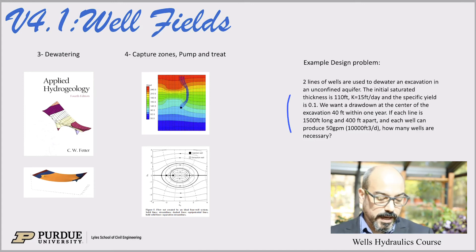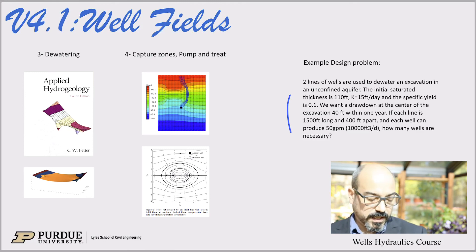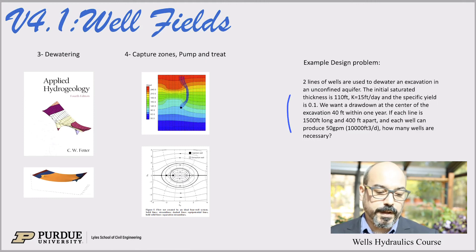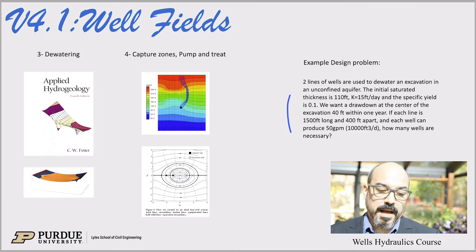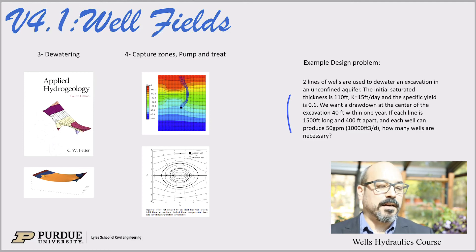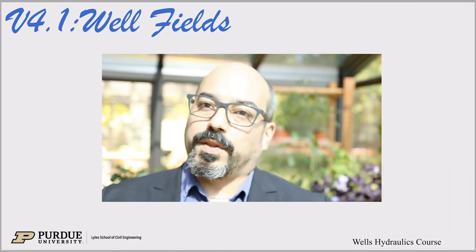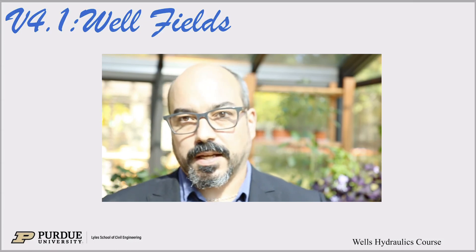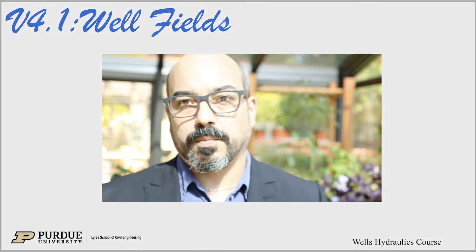Here's an example design problem. We have two lines of wells to dewater an excavation in an unconfined aquifer. The initial saturated thickness is 110 feet, hydraulic conductivity is 15 feet per day, and specific yield is 10 percent. We want the drawdown at the center of the excavation to be 40 feet within one year. Each line is 1500 feet long and 400 feet apart, and each well can produce 50 gallons per minute — how many wells are necessary? This is a very practical, concrete example. In the next video, we will jump into the superposition principle and those lectures. Thank you.